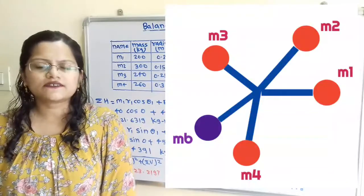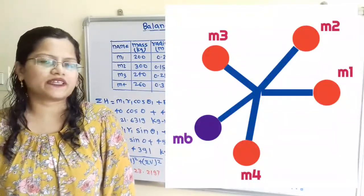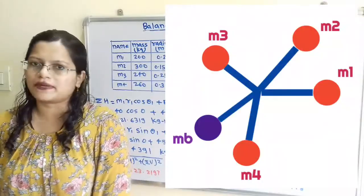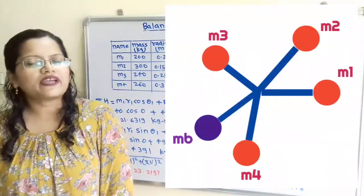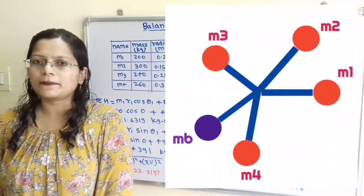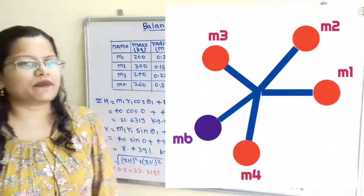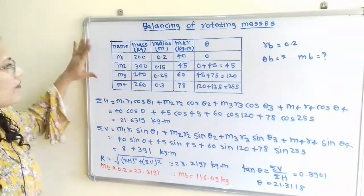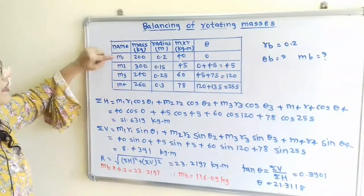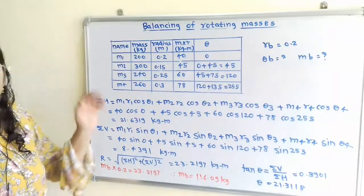In this question, 4 masses M1, M2, M3 and M4 are rotating in a single plane, and we have to find out the magnitude and position of the balancing mass.